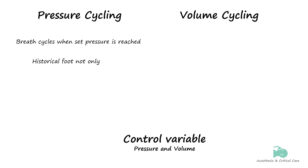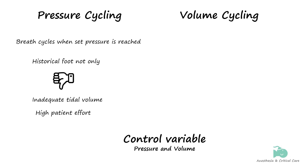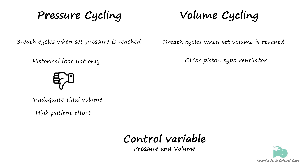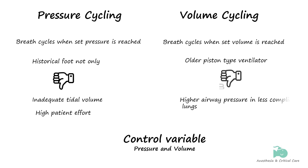Pressure cycling was famous in the past because it required nothing more than a spring-loaded diaphragm valve as the pressure cycling mechanism. It did have drawbacks, like inadequate tidal volume if the pressure threshold was set too low, and required higher patient effort to cycle the breath. Similarly, volume-cycled breaths end when the specified set volume has been delivered. Older piston ventilators were volume-cycled, delivering a predetermined volume before cycling to expiration. However, volume cycling has the propensity to generate high peak airway pressures when lung compliance deteriorates, resulting in large incidences of pneumothorax in the past.